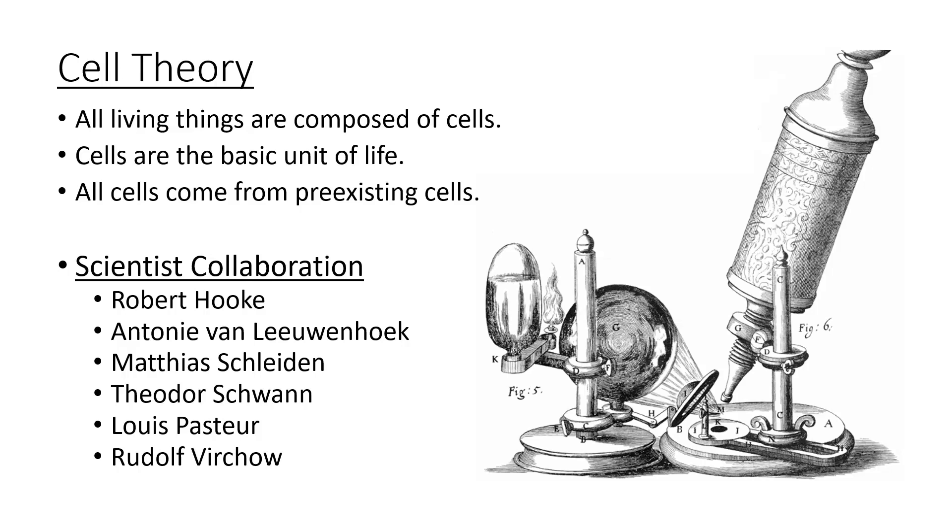So in order for us to understand what the cell theory is, we need to identify what the statements within the cell theory are. The cell theory is made up of three statements. The first of which is all living things are composed of cells. That is pretty straightforward. Everything that is currently living that we know about. The cell theory has constantly been evolving over time as our technology has improved, as our understanding of science in general has improved. But within the current definition of living things, if you are considered living based on our known definition, you are composed of cells. Humans are a perfect example of that. Humans are composed of cells. Those cells make up tissues. Those tissues make up organs. Those organs make up organ systems. And eventually organ systems come together to compose an organism.